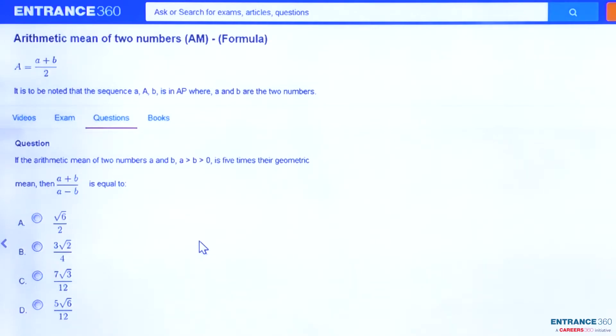The question is: we are given the arithmetic mean of two numbers A and B, which is equal to five times the geometric mean of A and B. Then we need to find the value of (A+B) divided by (A-B).